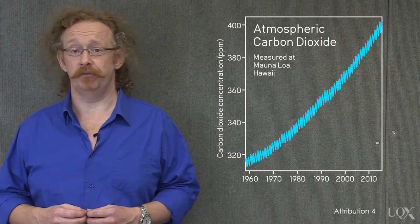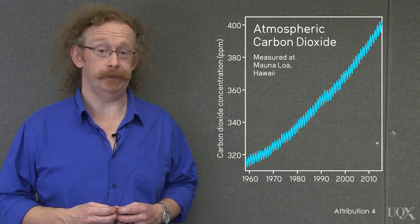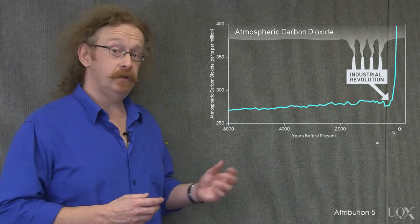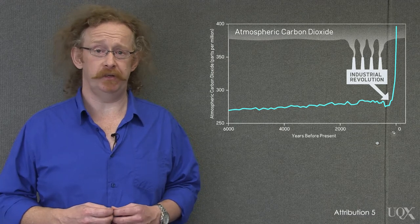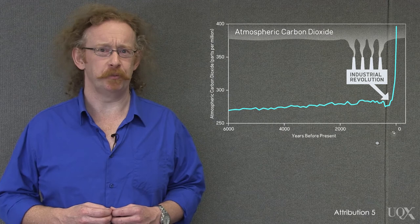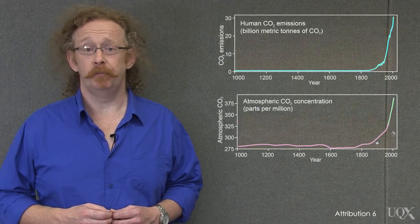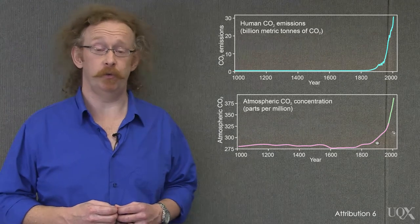Scientists became more aware of this after 1958, when accurate measurements of CO2 concentrations were first made at the Mauna Loa Observatory in Hawaii. Together with the ice core record, we see that atmospheric CO2 began to rapidly grow soon after the start of the Industrial Revolution. It would be a bit of a coincidence if this were a natural phenomenon. Furthermore, the increase in atmospheric CO2 has closely tracked the amount of CO2 that we have been releasing.